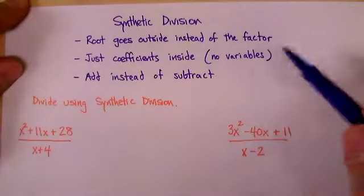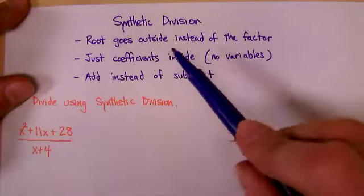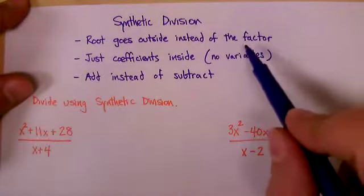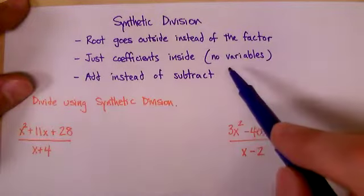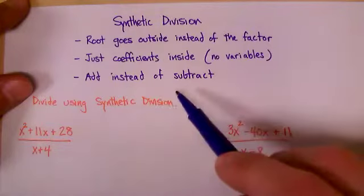The only differences here or the main differences are right here. Instead of using the factor, you're going to use the roots. You're going to have just coefficients, no variables, and you're going to add instead of subtract.